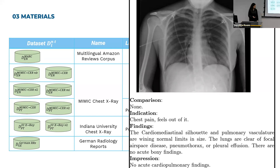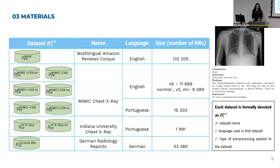I also translated the MIMIC dataset to Portuguese. Then I used the Indiana University chest X-ray dataset, also publicly available, which I translated to Portuguese. And at last, a German radiology report dataset from a German hospital that contains reports entirely in German.